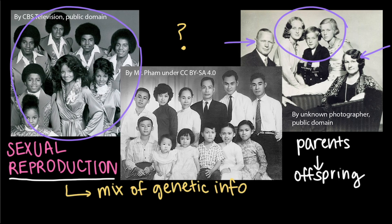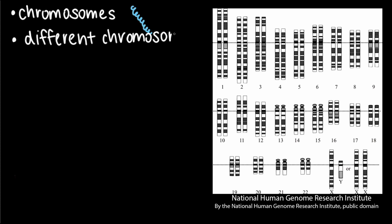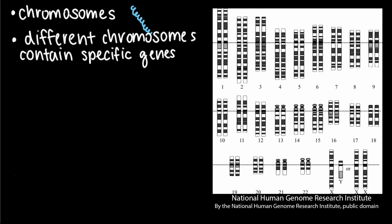Parents pass this genetic information to their offspring via chromosomes — the coiled-up DNA molecules found inside your cells that contain genes. Sexually reproducing organisms often have many different chromosomes, each containing specific genes. For example, this diagram represents a complete set of human chromosomes. As we can see, there are 23 different chromosomes assigned numbers 1 through 23.